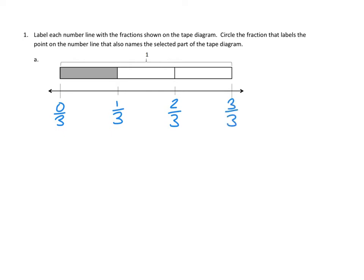And now I want to look at that second part of the problem: circle the fraction that labels the point on the number line that also names the selected part of the tape diagram. This part is super confusing, but I think it just means that it matches the shaded part of the tape diagram. The shaded part — well, on the tape diagram we've gone out one of the three parts, we've gone out one third. So I am simply going to circle one third. We have gone out one third on our number line, and that matches how much is shaded in the tape diagram.